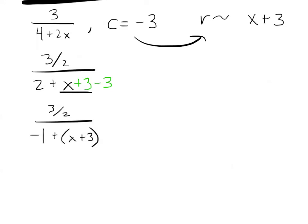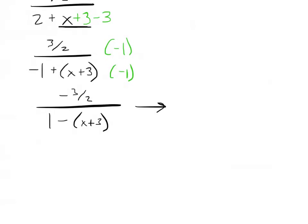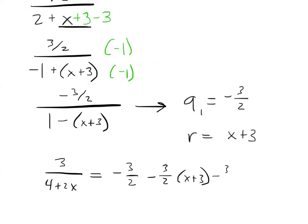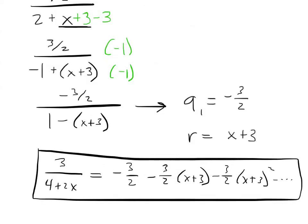The next step is this thing really needs to be a positive 1. So I'm going to multiply top and bottom of this expression by negative 1. Doing that is going to give me negative 3 halves on the top. On the bottom, I'm going to have 1 minus (x+3). And at this point, I'm in the proper form. This thing tells me that the first term is negative 3 halves. It tells me the common ratio is x plus 3. It tells me it's not alternating because there's a negative here. And so that means my expression, which was originally 3 over 4 plus 2x, is equal to negative 3 halves minus 3 halves times (x+3) minus 3 halves times (x+3) squared, and so on. Again, only on the interval of convergence, but there's your power series.